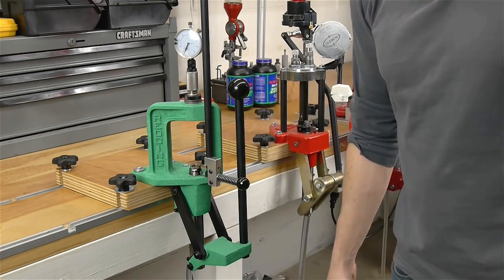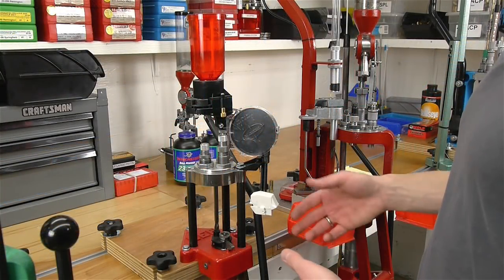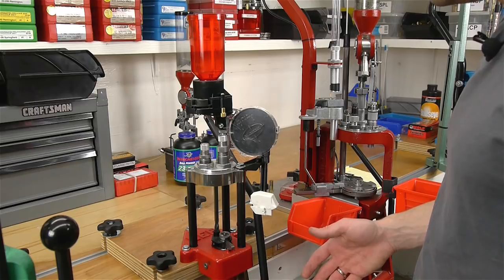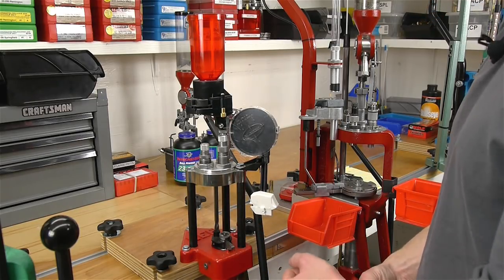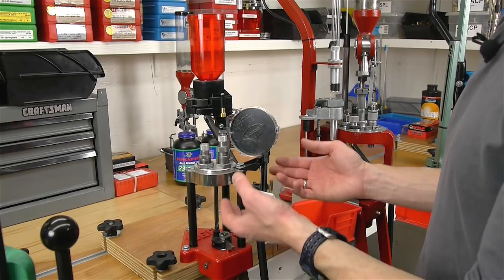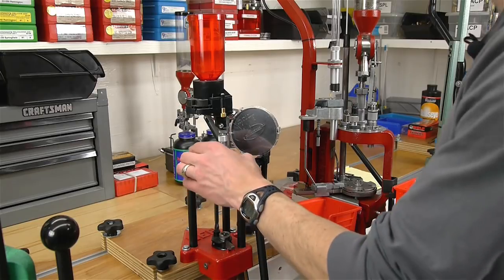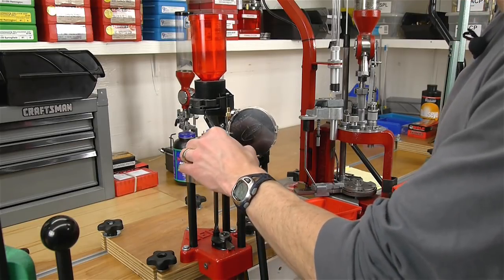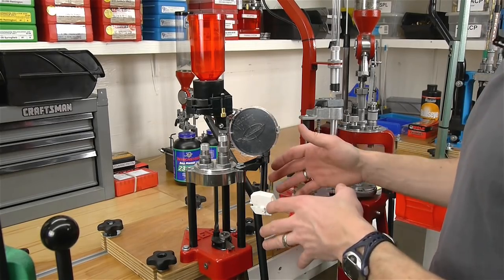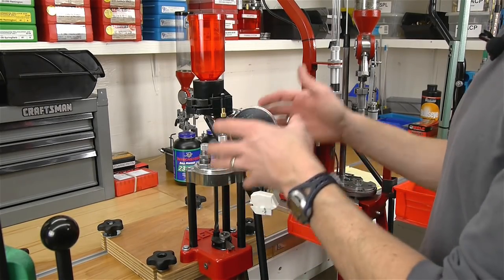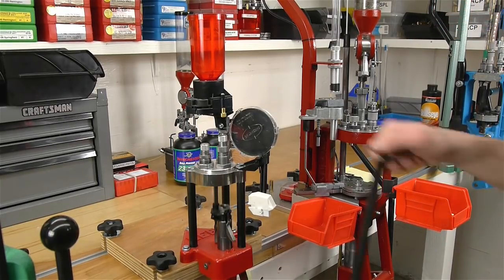Next we're going to look at a turret press. A turret press on the lower half is actually pretty much identical to the single-stage reloading press. The big difference is on the top we've got multiple dies. On some presses the dies will index manually where you can manually index different dies into position at a given point in time so that you can use that particular die. This press here actually features an auto-indexing system so that dies can be advanced automatically.